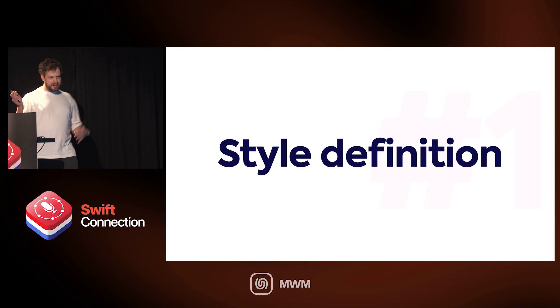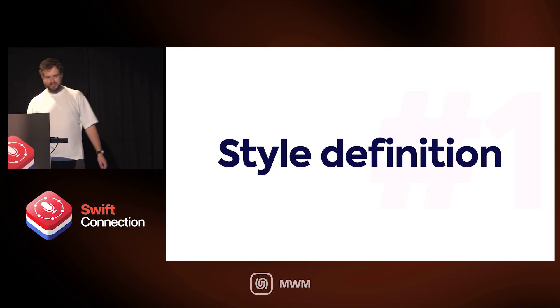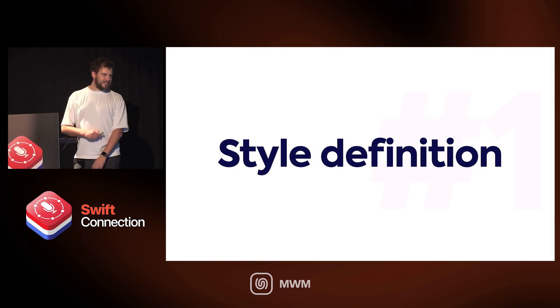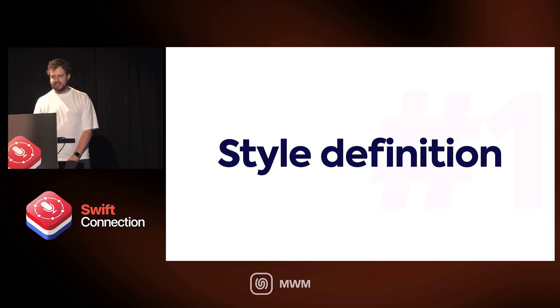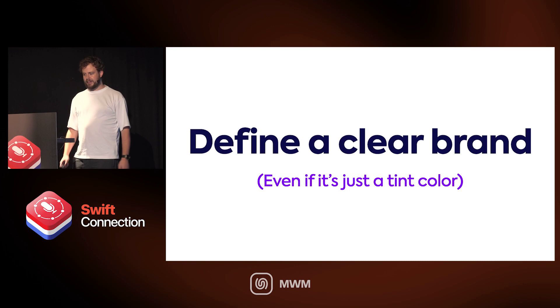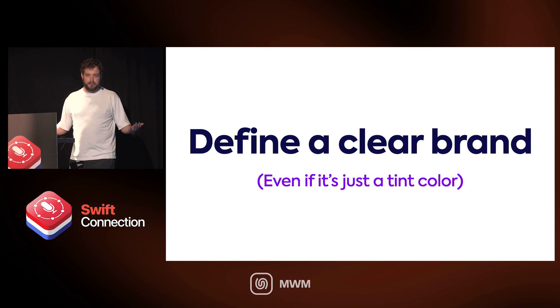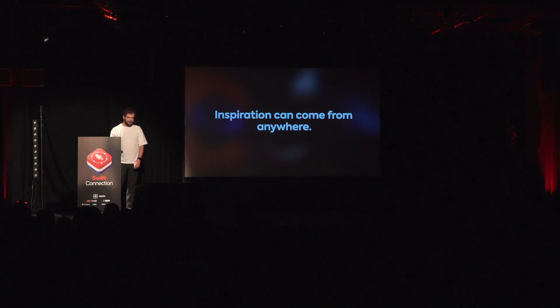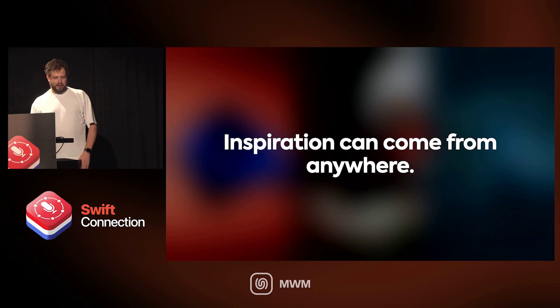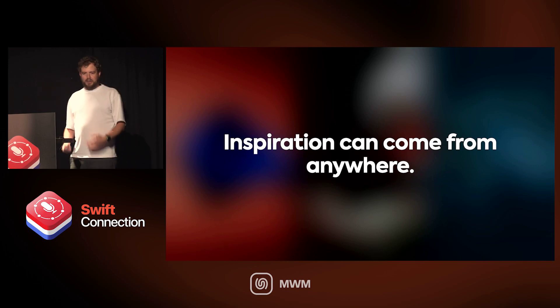We start with the first thing. You open Xcode, you start a new app, you've found a cool name through ChatGPT or whatever. You start with style definition — this is the first blank canvas that you face. You start by defining a clear brand. Defining a clear brand is super important, even if it's just a tint color. Every project comes with a default tint color — I think it's blue, but maybe that's why so many apps are blue. How do you pick the right color? For me, and I think for a lot of designers, picking a color is the most difficult thing to do.